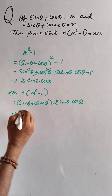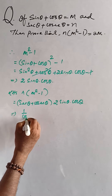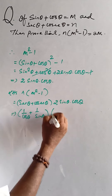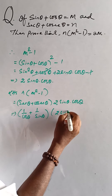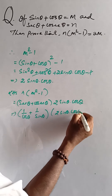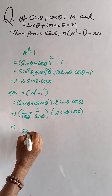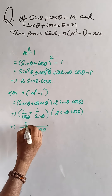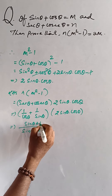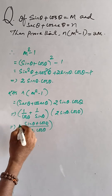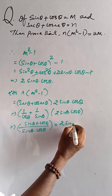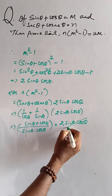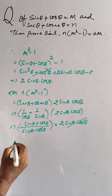Substituting, we get (1/cosθ + 1/sinθ) × 2sinθcosθ. This simplifies to (sinθ + cosθ)/sinθcosθ × 2sinθcosθ. The sinθcosθ terms cancel.